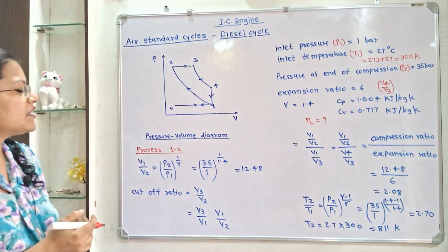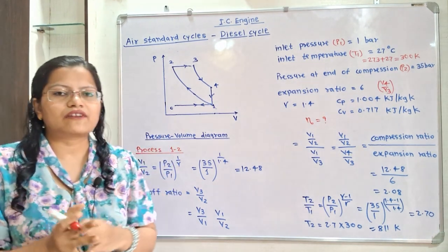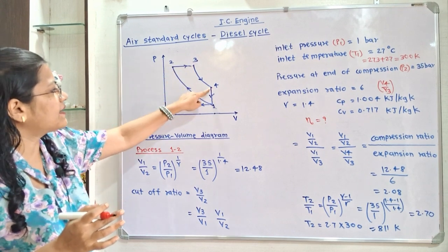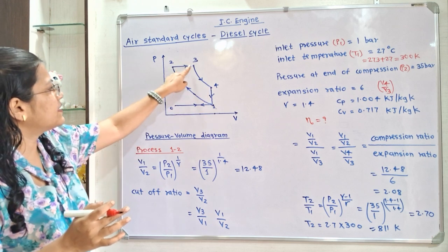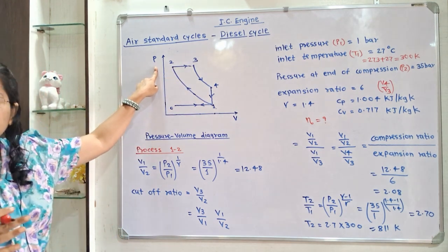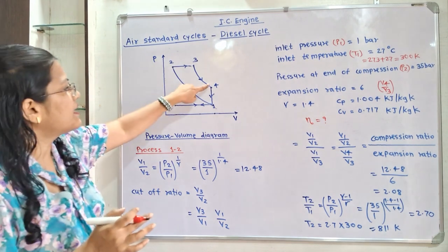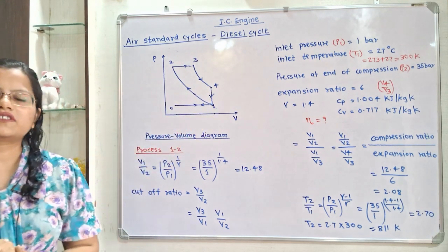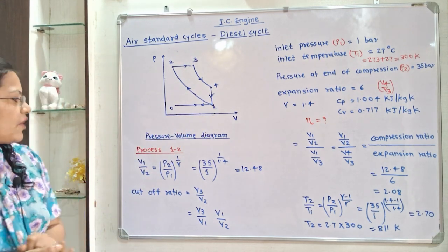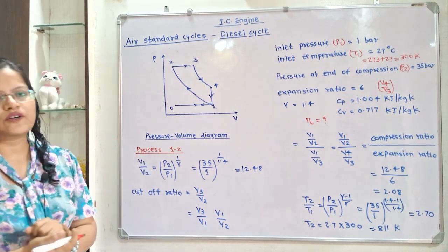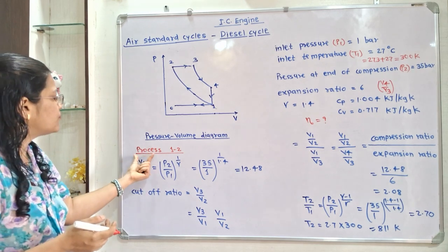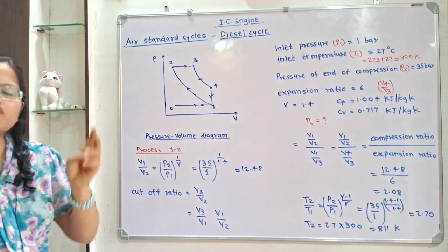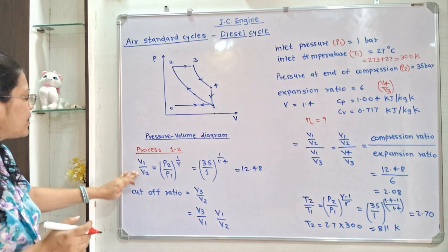We will first calculate the heat addition — that is heat supplied — and heat rejected. Heat is supplied during process 2 to 3, which takes place at constant pressure, and heat is rejected during process 4 to 1, which takes place at constant volume. Now we will move to process 1 to 2.